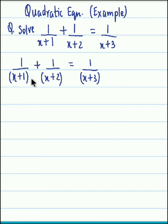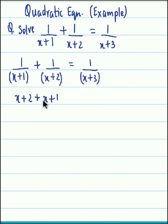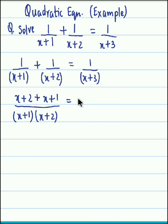Let us equalize the denominators on the left hand side. So 1 times x plus 2 gives us x plus 2, plus x plus 1 times 1, giving x plus 1. This is all divided by x plus 1 into x plus 2, equal to 1 upon x plus 3.